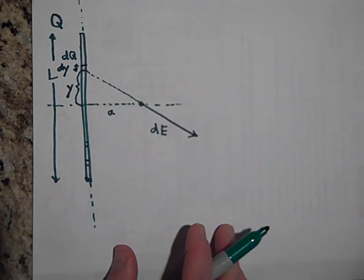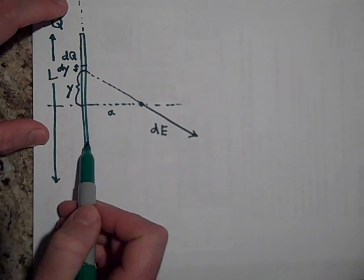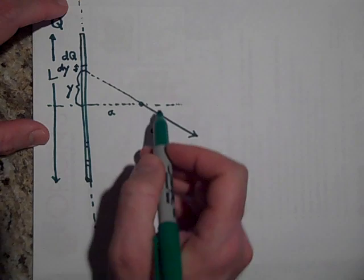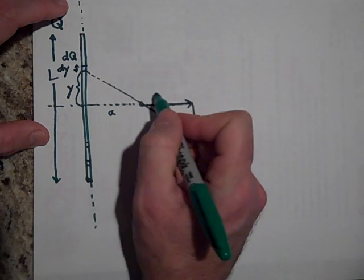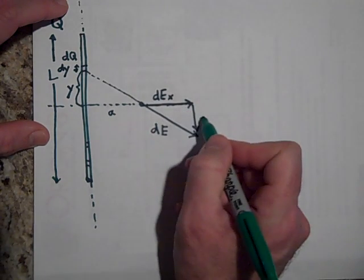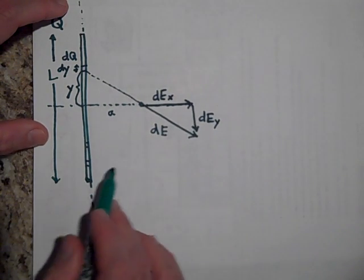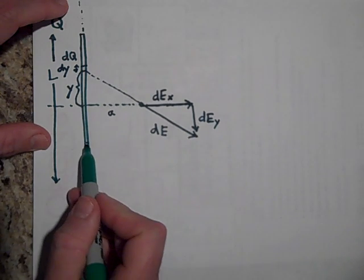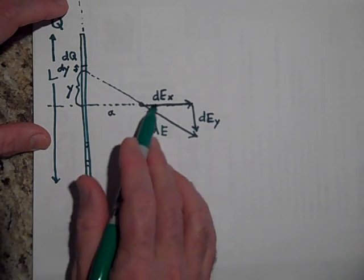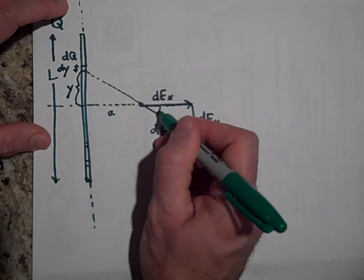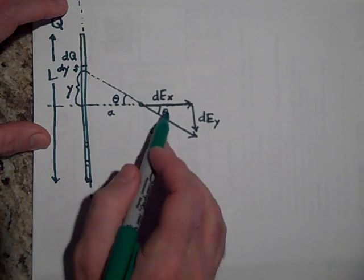So what we're gonna do is first of all realize that all the Y components, if I break DE into an X and a Y component, so DE sub X and DE sub Y, all the Y components will add up to zero because for every one that's here there'll be one up here where the Y is negating it. But their DE sub Xs will add up. I'm going to call this theta, and by the way this is theta also because of alternate interior angles.